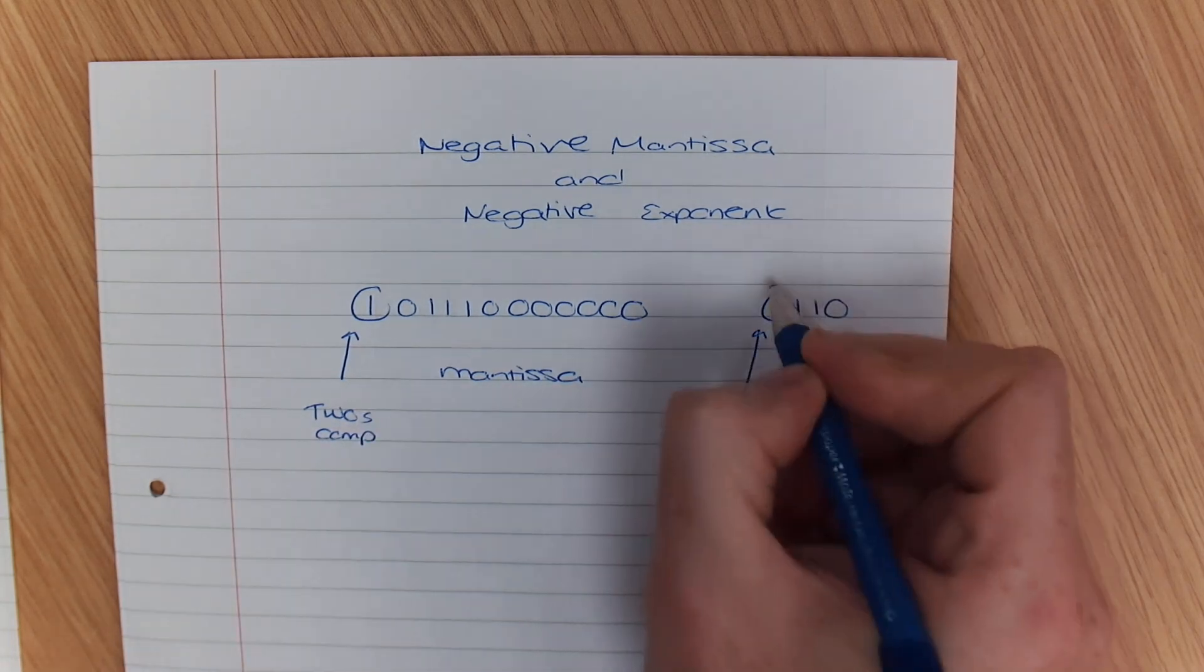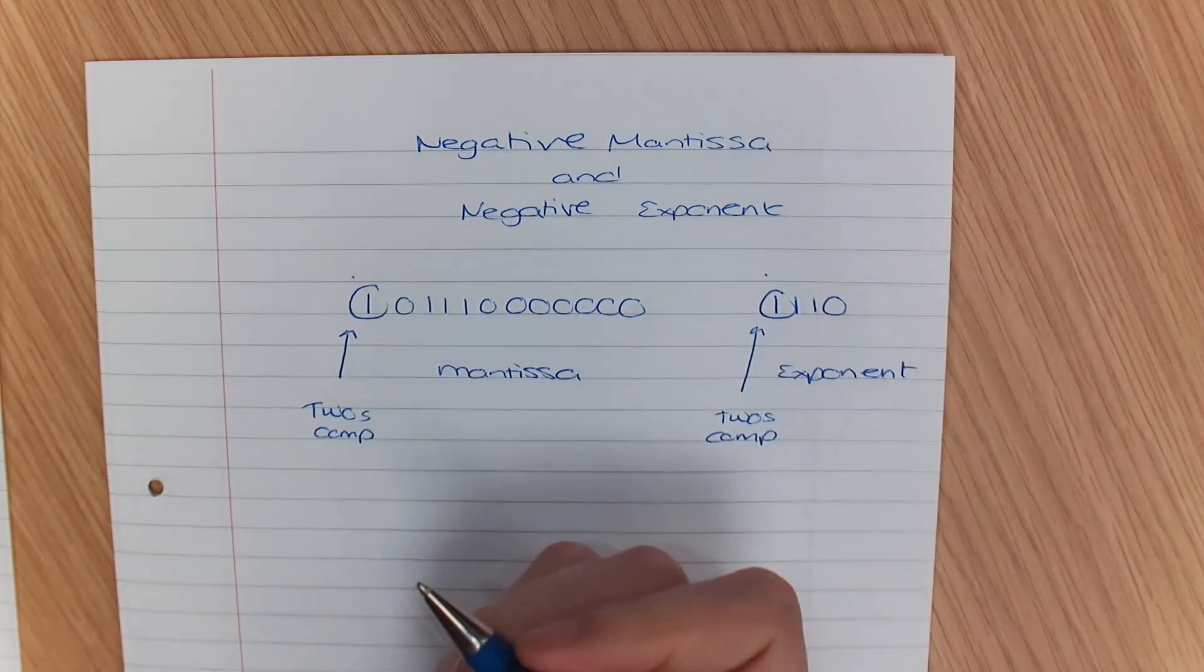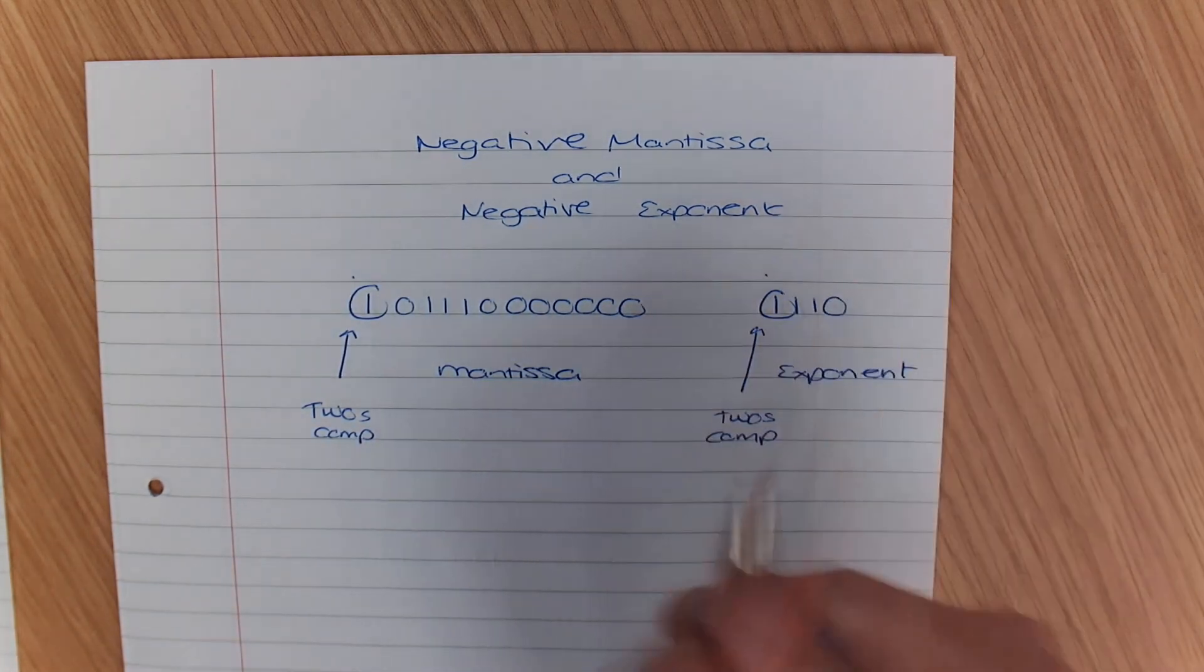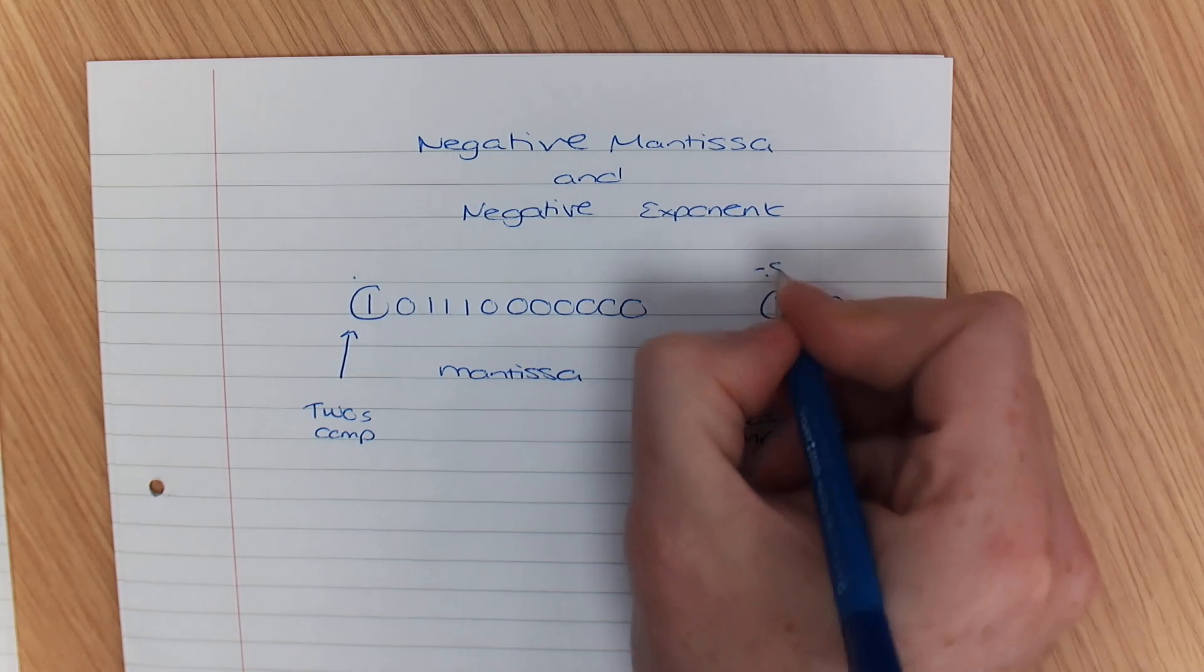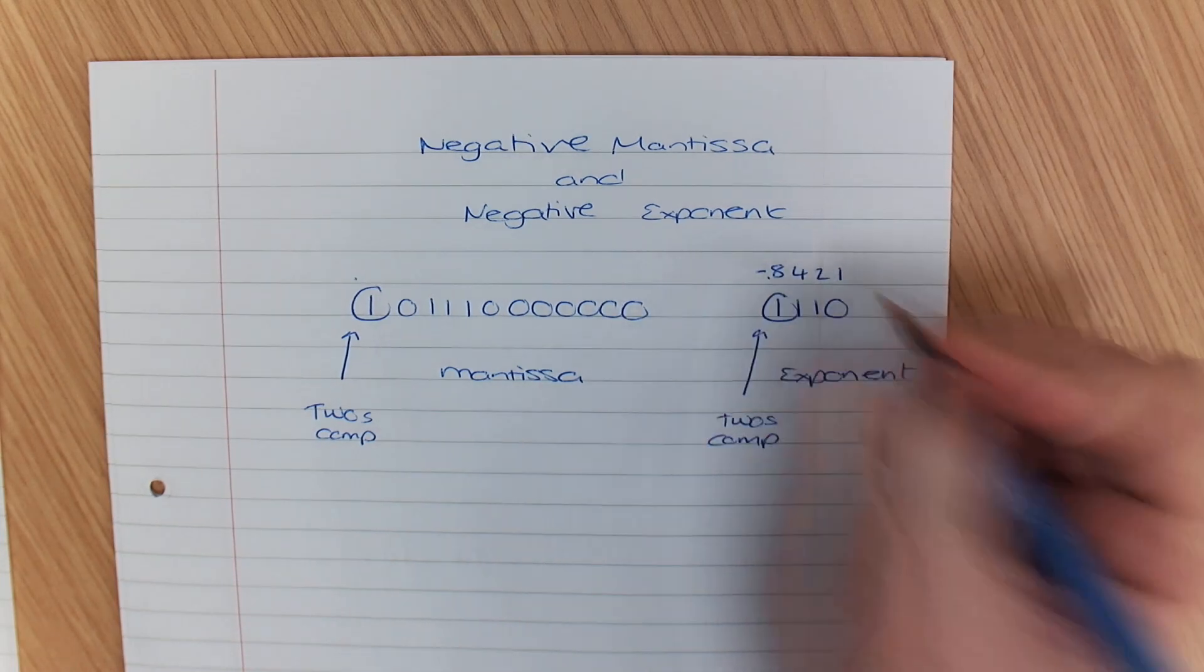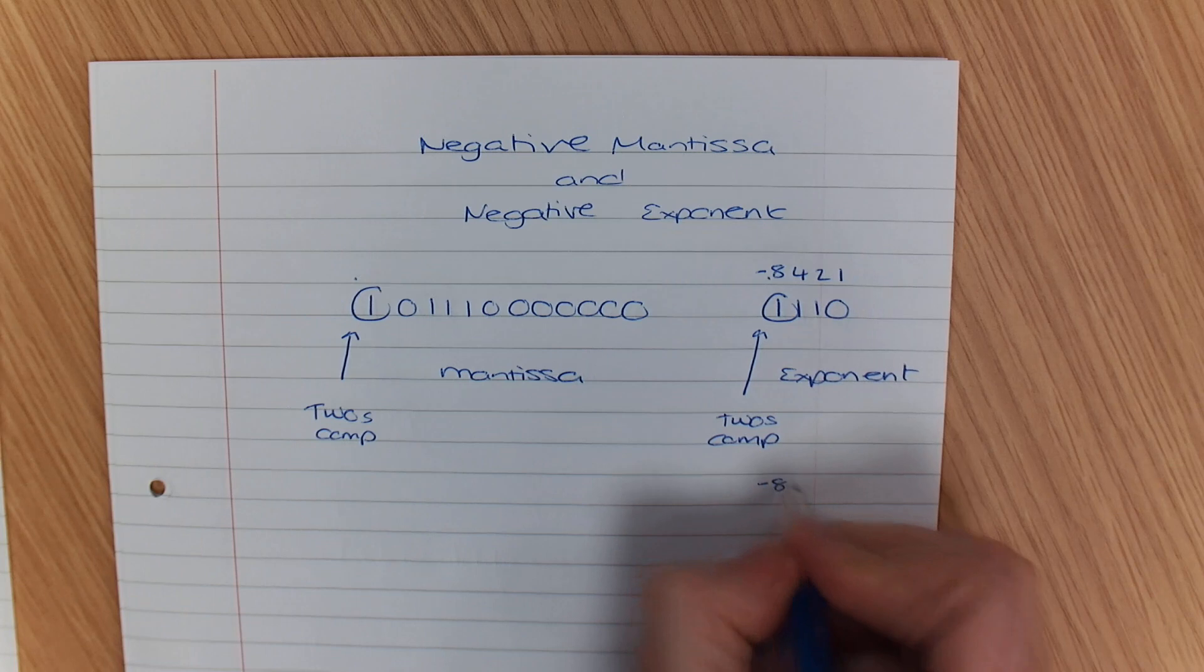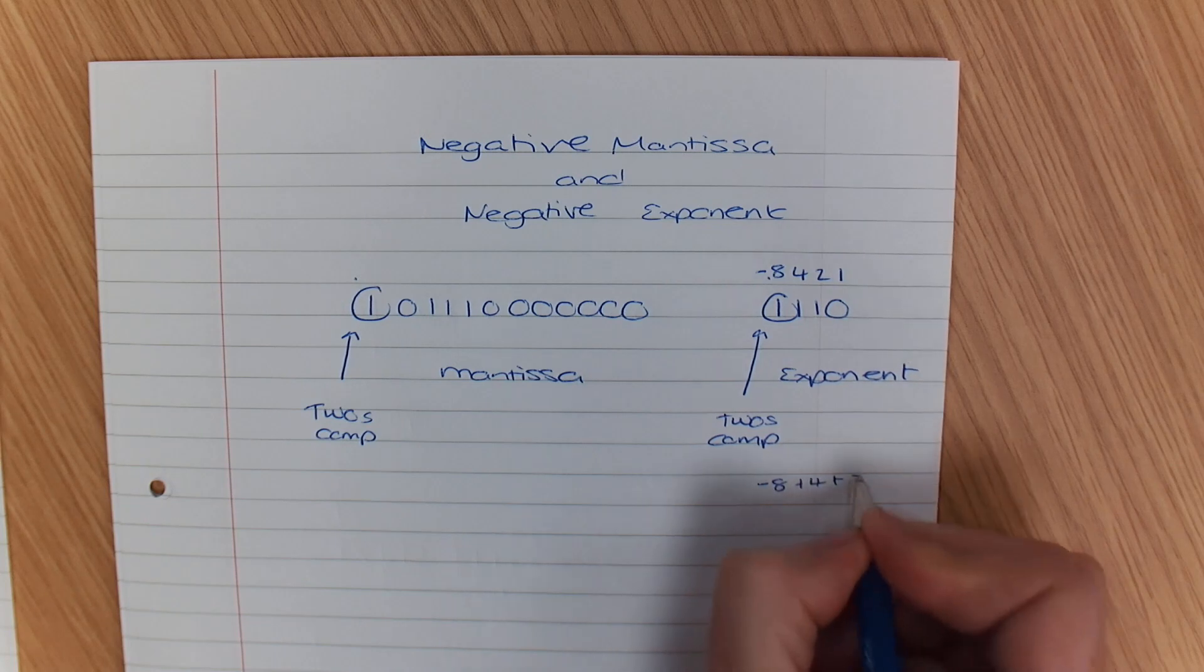That means that this number represents a negative number. So we're going to start with the exponent first and we know we've got minus 8, 4, 2, 1. Minus 8 plus 4 plus 2 is equal to minus 2.